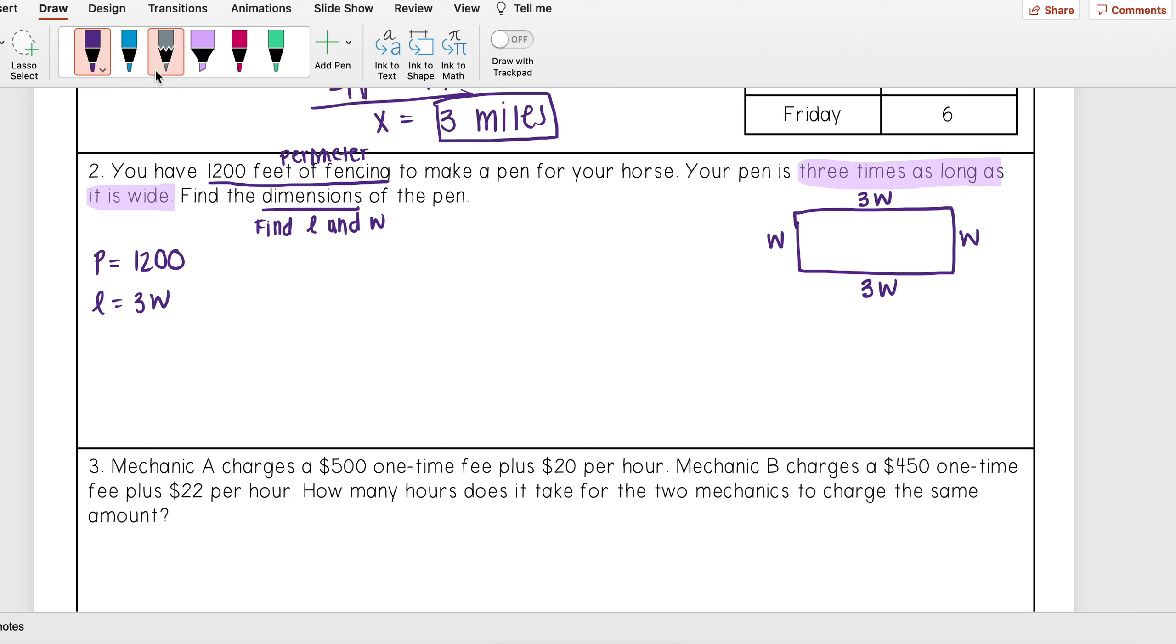Now there's two different ways that you can go about solving it. I'm going to show both. The first one is to remember that perimeter is equal to 2 times length plus 2 times width. And now I'm going to substitute in some information that I know. I know that my perimeter is 1200, so I'm going to replace p with 1200. I know that my length is really just equal to 3 times my width, so I'm going to replace l with 3w.